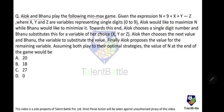Alok and Banu play a min-max game. Given the expression n = 9 + x + y − z, where x, y, z are variables representing single digits 0 to 9, Alok wants to maximize n while Banu wants to minimize it. Alok chooses a single digit number and Banu substitutes it for a variable x, y, or z. Alok then chooses the next value, Banu assigns the variable, and finally Alok proposes the remaining variable. What is the value of n assuming both play optimally?